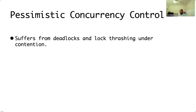Pessimistic concurrency control suffers from deadlocks and lock thrashing under contention. This can lead to higher abort rates and higher latencies. If a transaction is being aborted, you have to retry until it is successful, so a transaction being successful can take a longer time.